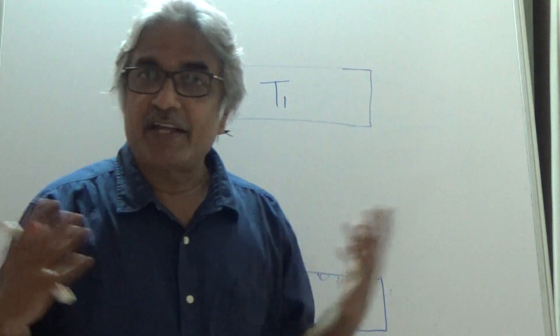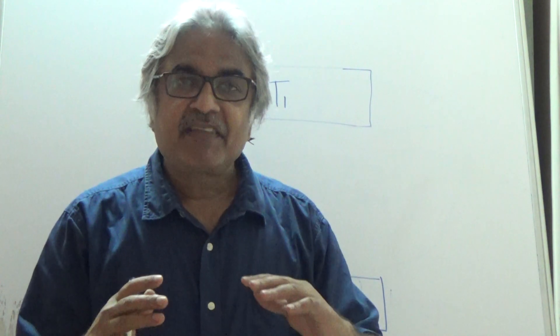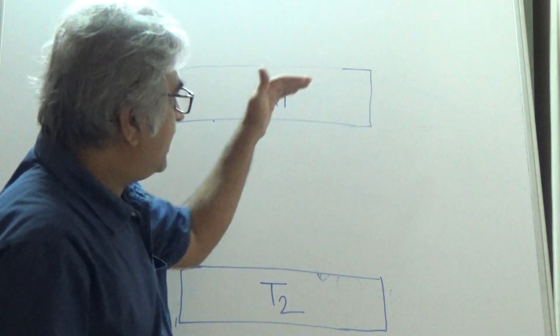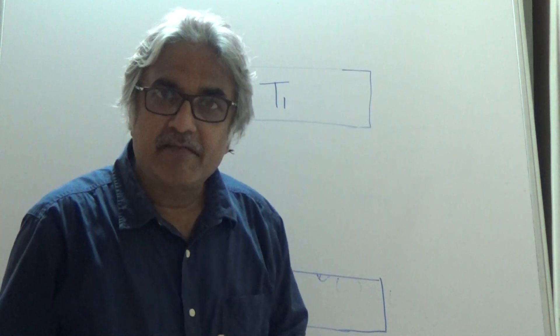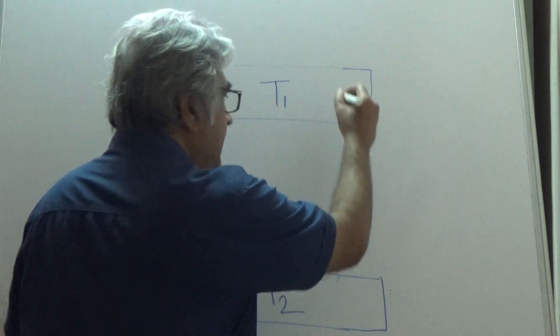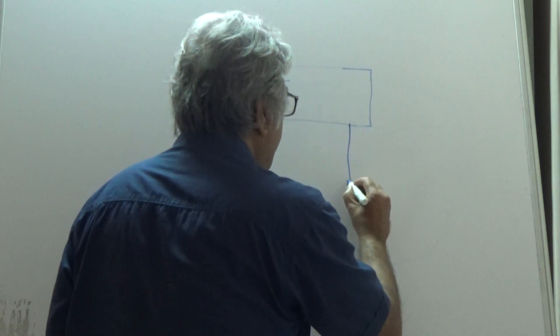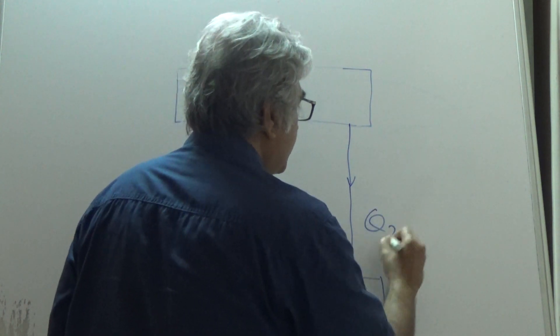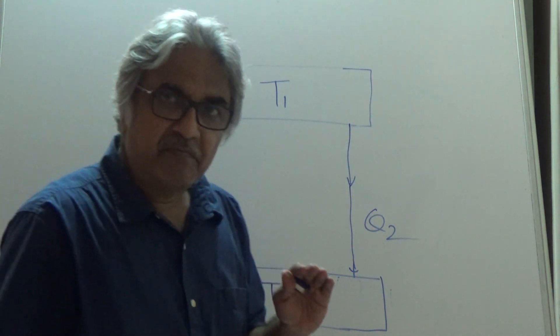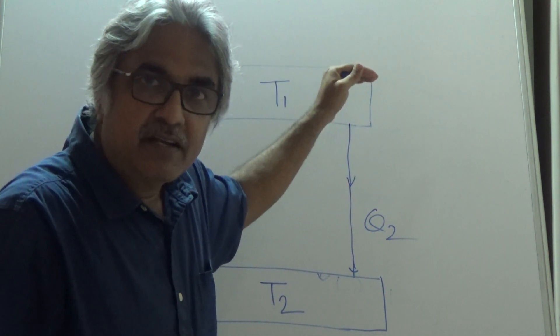But now we want to assume that heat transfer across a finite temperature difference is a reversible process. Consider two bodies: one at temperature T1, which is higher than temperature T2. If they are brought in contact and heat transfer is allowed, in a given time let's say Q2 kilojoules of heat is transferred from T1 to T2. Now assume this heat transfer to be reversible.